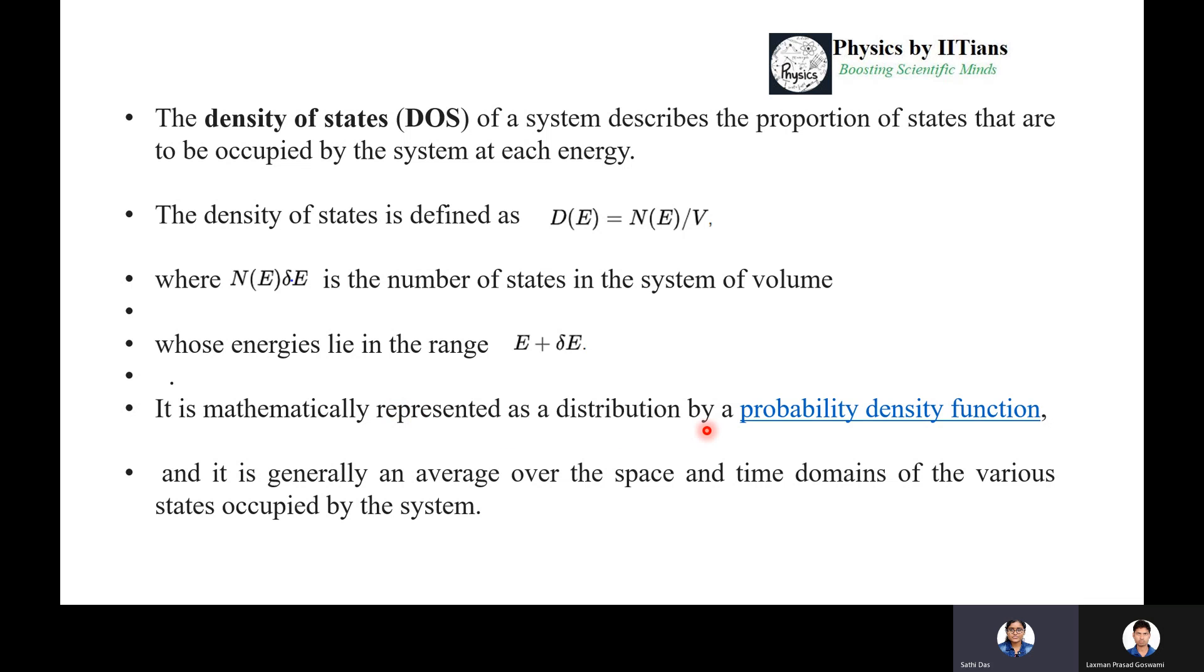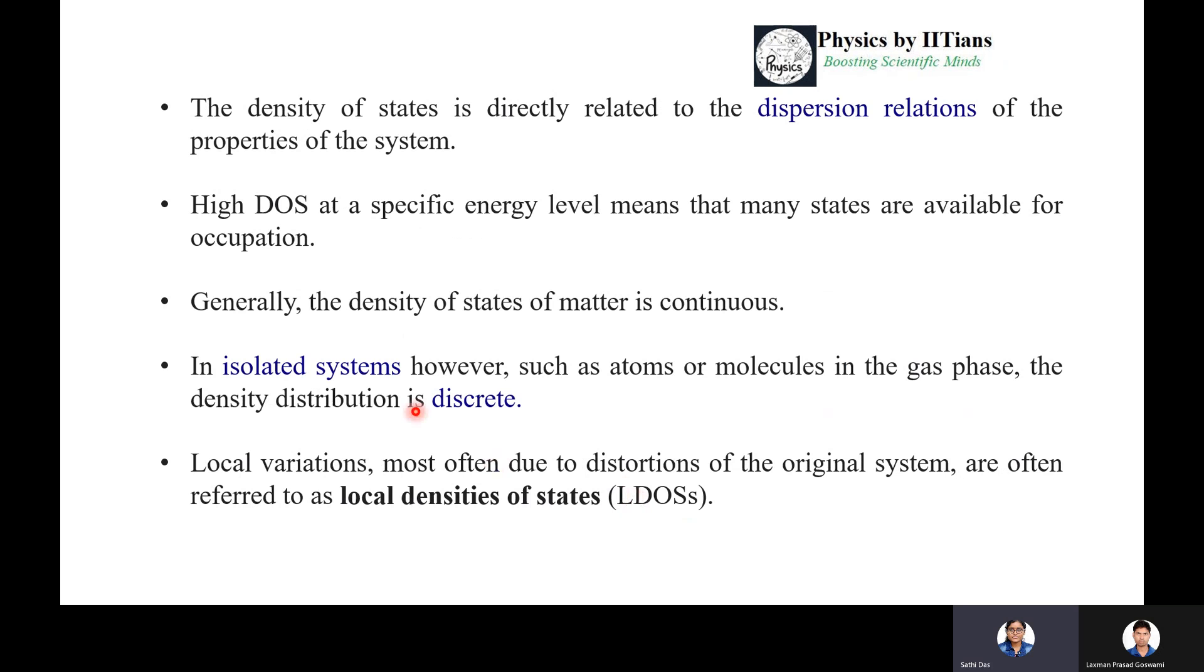It is mathematically represented as a distribution by a probability density function, and it is generally an average over the space and time domains of the various states occupied by the system.